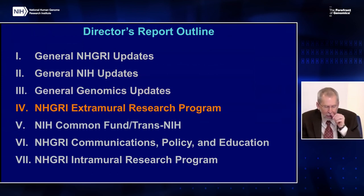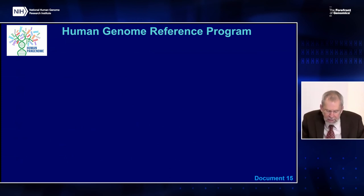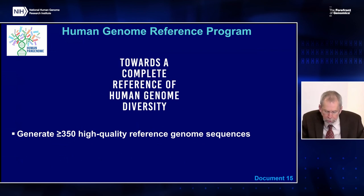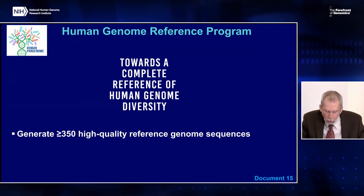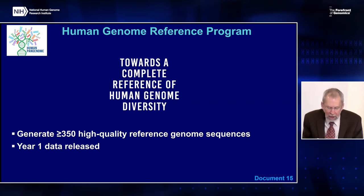Moving on to the NHGRI extramural program: the Human Genome Reference Program, or HGRP, represents NHGRI's continued commitment to refining and maintaining the human reference genome sequence. This multi-component program, currently in its second year, aims to generate at least 350 high-quality human reference genome sequences, a subset of which will be finished telomere-to-telomere sequences. To represent as much of human haplotype variation as possible, the sequences will be from ancestrally diverse populations and incorporated into a pan-genome reference. Year one data for the first 30 high-quality genomes have been released and are available for download in multiple repositories.